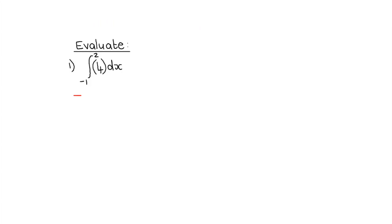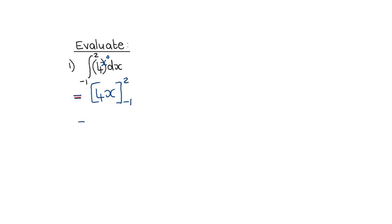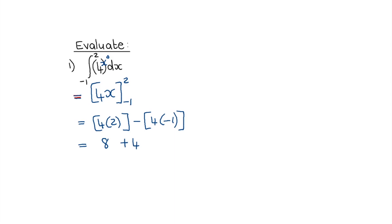For the definite integral example, I integrate as normal. I see there's an x to the power zero next to the 4, so integrating gives 4x to the power one divided by one, which is 4x. The integral is evaluated between x equals negative 1 and x equals 2, so I substitute the upper limit first: 4 times 2 equals 8, then subtract 4 times negative 1 equals negative 4. So 8 minus negative 4 equals 8 plus 4 equals 12.